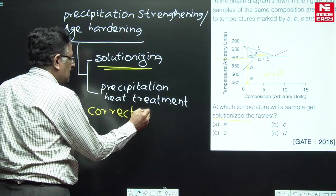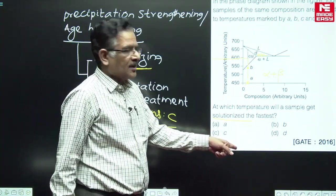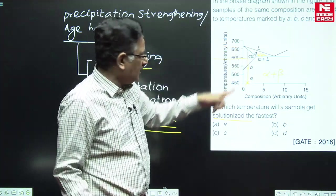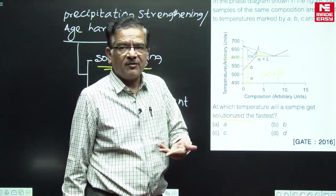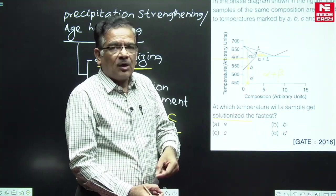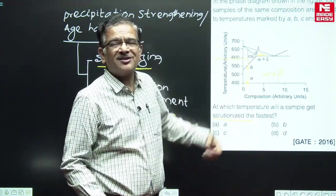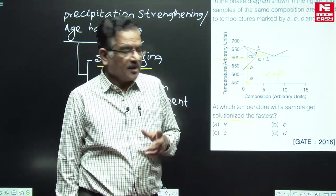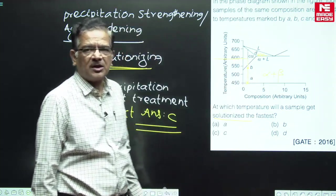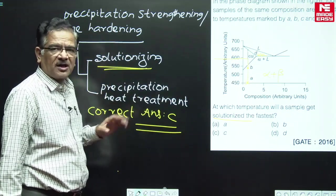The correct answer for this question is given by choice C. Choice C indicates point C on the diagram. After solutionizing, you are going to rapidly cool the specimen to room temperature — that is why they use the term 'fastest.' After solutionizing, the specimen is cooled speedily by quenching. Going from temperature C to room temperature by quenching is the fastest cooling. So solutionizing means converting a two-phase mixture into a single-phase solid solution, and going from room temperature up to temperature C achieves this. Therefore, the correct answer is choice C.